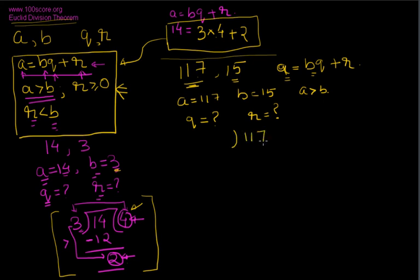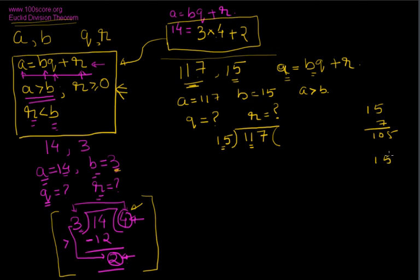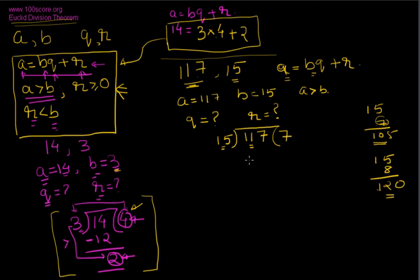117 comes inside and 15 goes outside. We need the closest multiple of 15 that is less than or equal to 117. Trying 15 times 7 gives 105; trying 15 times 8 gives 120, which is greater than 117. So we choose 15 times 7, which is 105. The quotient is 7. To find the remainder, subtract: 117 minus 105 equals 12.